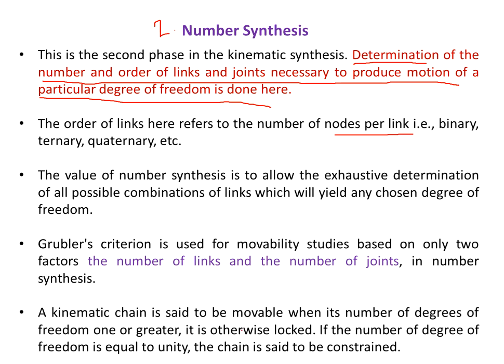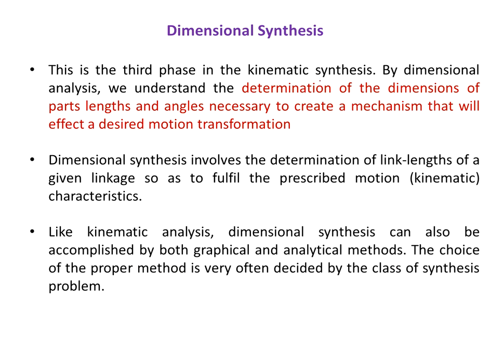The Grubler criteria is commonly used to find the degree of freedom. Once I find the degree of freedom, I can determine whether the mechanism is movable, locked, or constrained. It is movable when the number of degrees of freedom is one or greater; it is locked when equal to zero; and constrained when equal to one. We prefer the degree of freedom to be unity so that the mechanism is under our control. That is number synthesis — determining the number and order of links and joints to produce a desired degree of freedom.